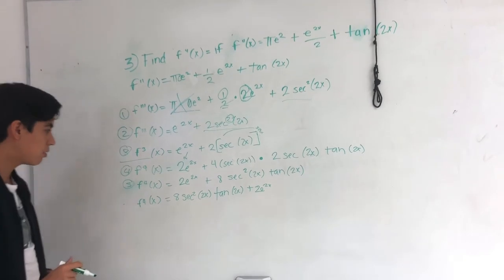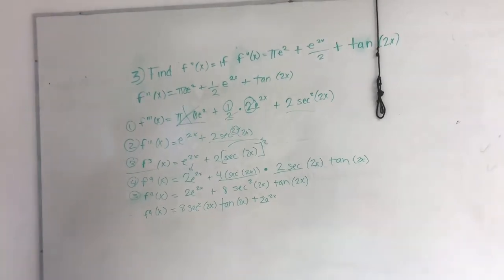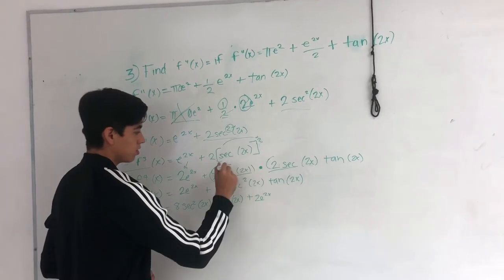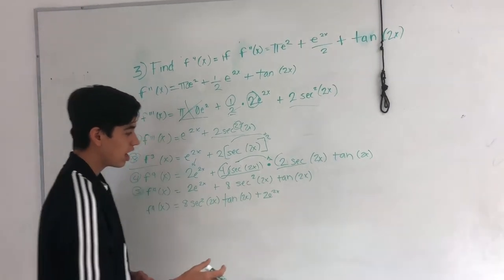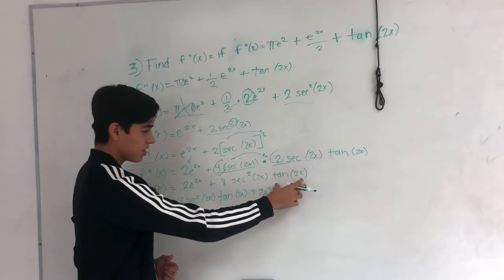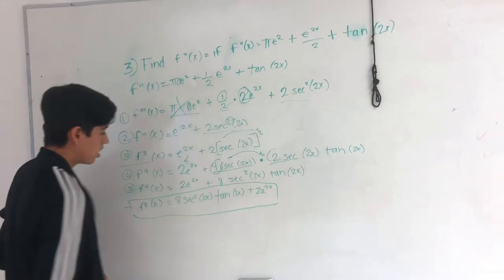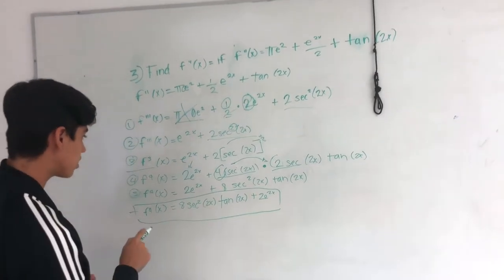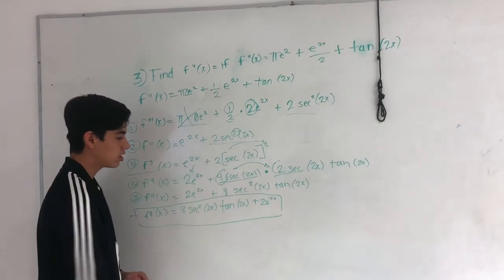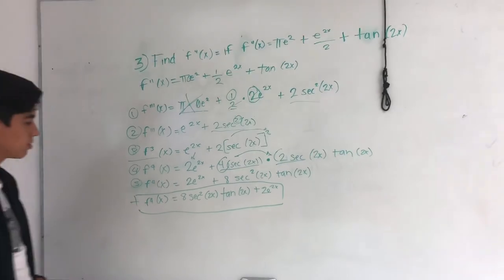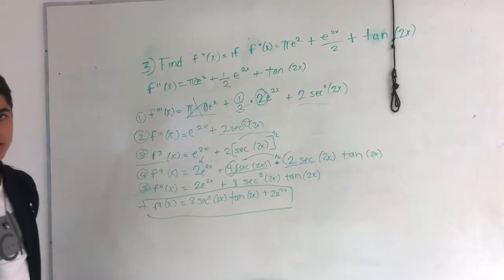The fifth step is to multiply. We have a common factor: we multiply 4 and 2 to get 8, because 4 times 2 is 8, to the second power because we have two secants. We write again the tangent of 2x. We rewrite the answer, writing first the secant and tangent, and the final answer is 8 secant squared of 2x times tangent(2x) plus 2e to the power of 2x.